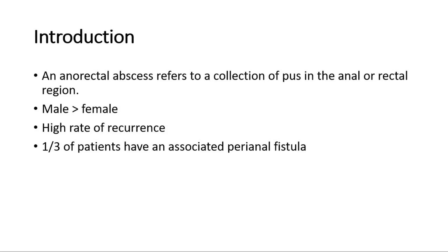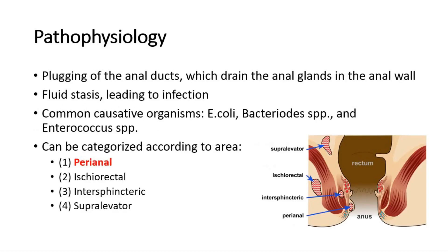For pathophysiology, anorectal abscesses are caused by plugging of the anal ducts, which drain the anal glands in the anal wall, which normally help to ease the passage of fecal matter using mucus secretions. The blockage of an anal duct results in fluid stasis, which will lead to infection.